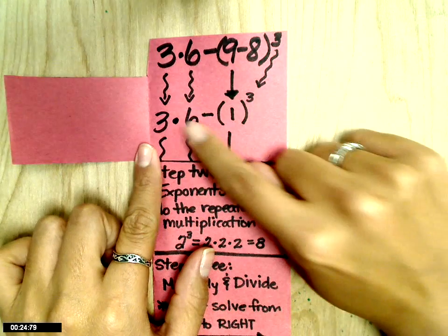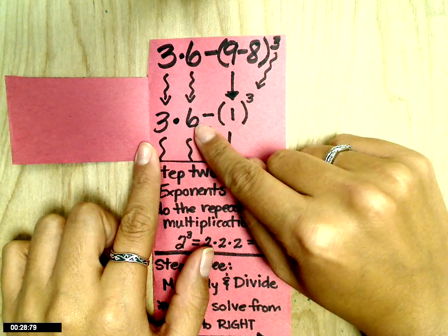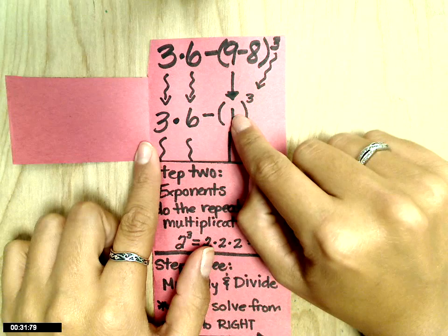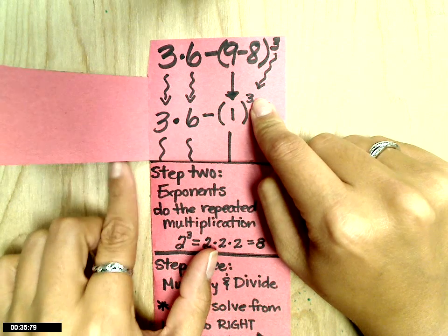When you open this up, you see that the 3 comes down and so does the 6 because we haven't done anything with that yet. But we're going to solve 9 minus 8 and we get 1. Then we also have to bring down the 3 for the exponent.